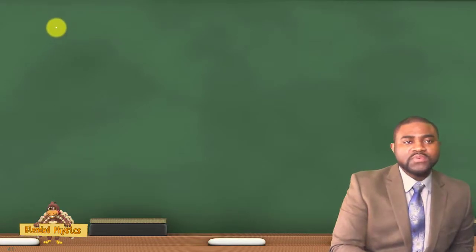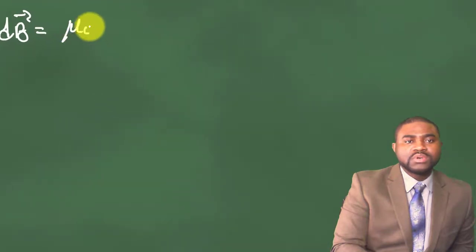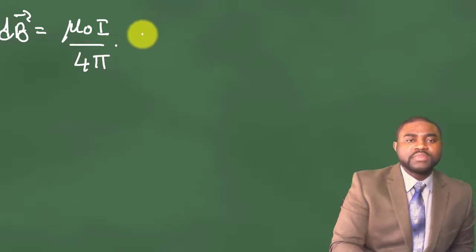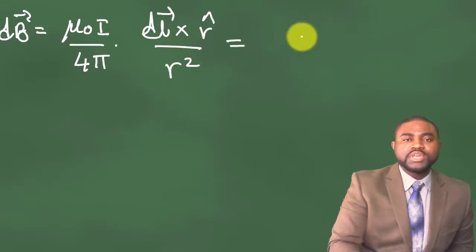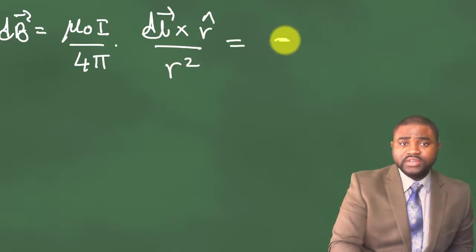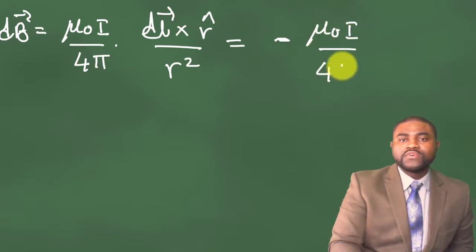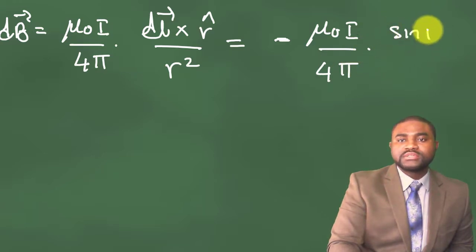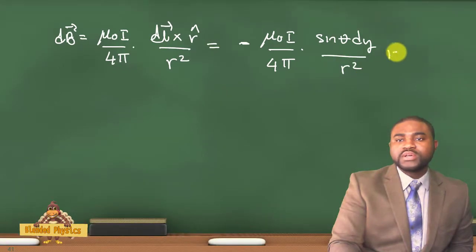Biot-Savart Law can be re-expressed as dB equal to μ₀I all divided by 4π, multiplied by (dl cross r̂) divided by r squared. This will be equal to negative μ₀I over 4π, multiplied by sinθ dy over r squared, times k̂.